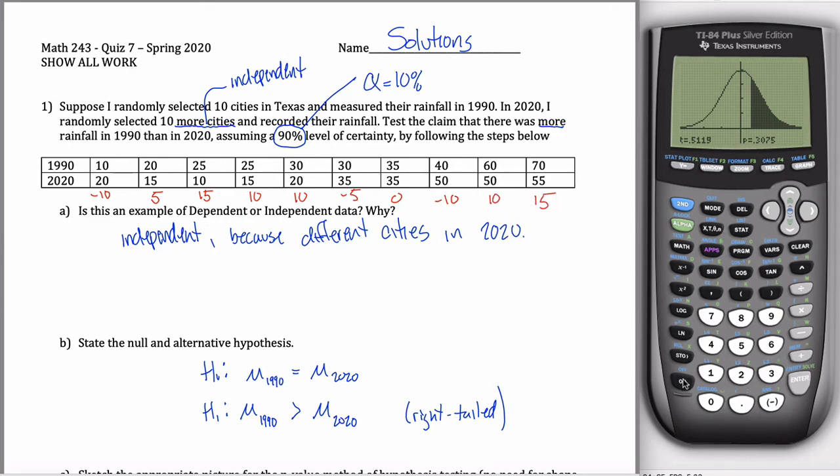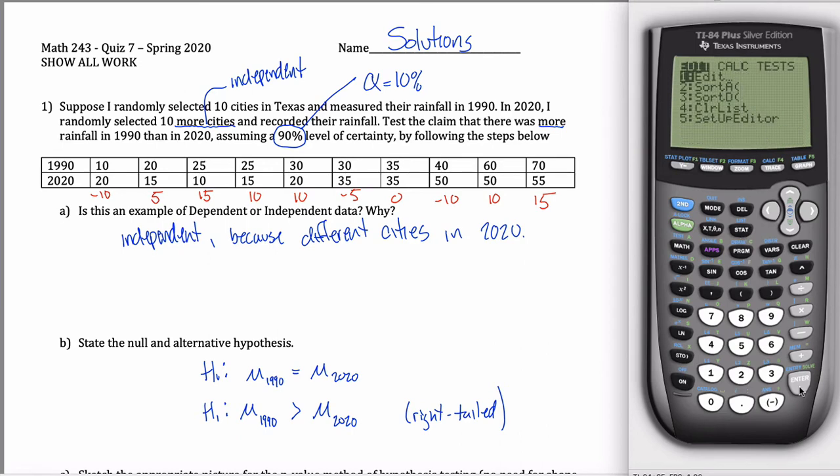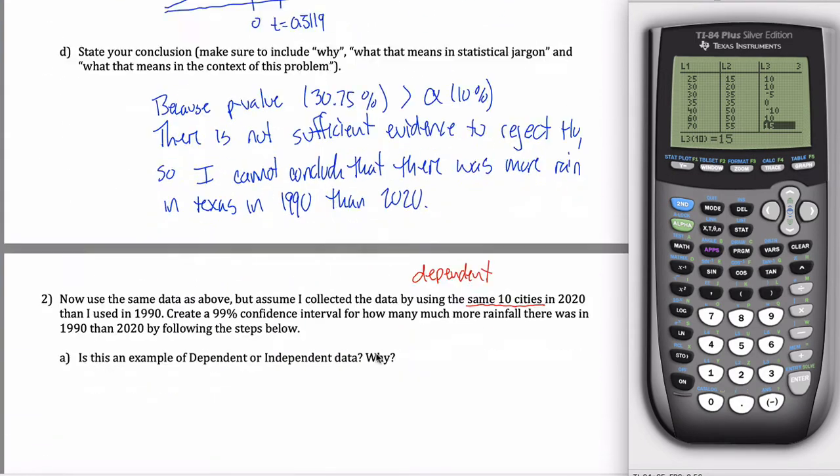And I've actually already done this, as I think I mentioned earlier. If you go stat, edit, and look at L3, what I did is I said I want L3 to be L1 minus L2. And then it populates this list for me. And it's a good little check, negative 10, 5, 15, 10, 10, negative 5, 0, negative 10, 10, and 15. Make sure you see the same numbers there and there. That gives you confidence that you typed in your observations originally correctly.